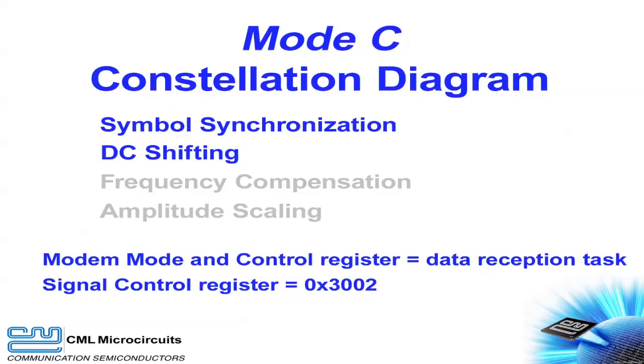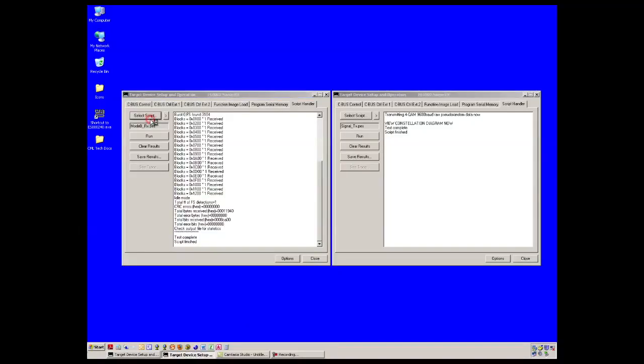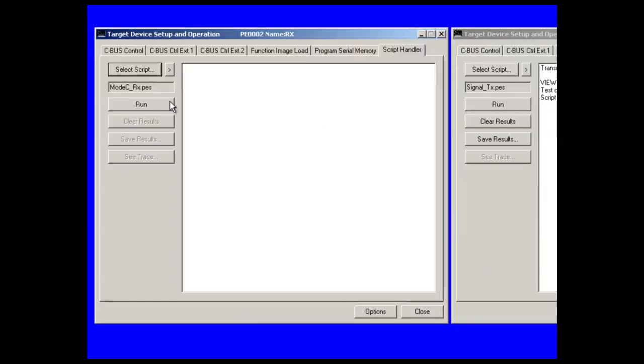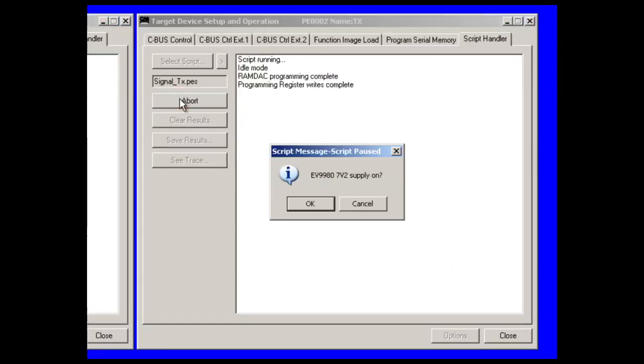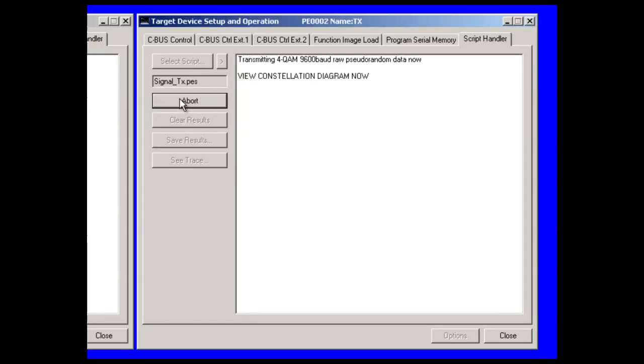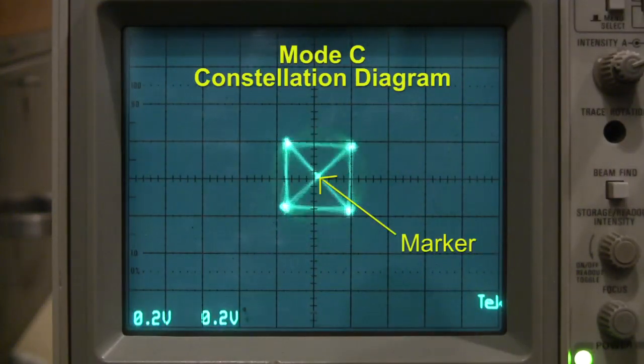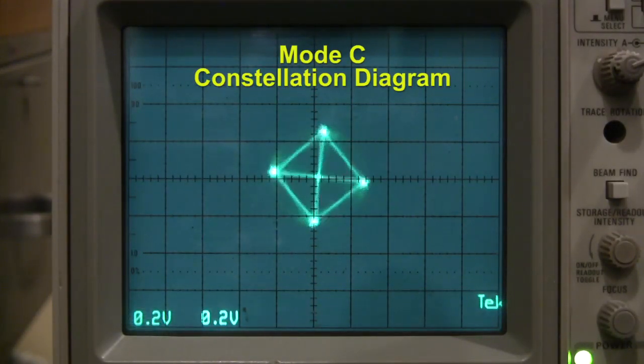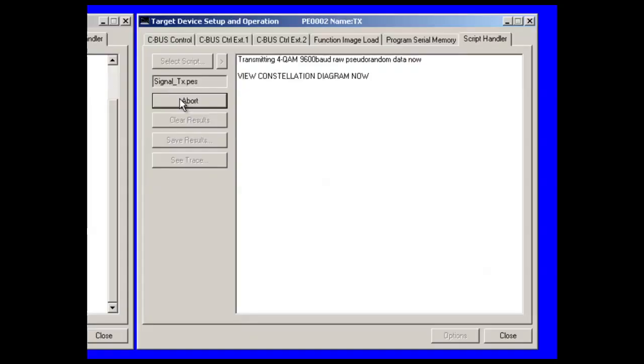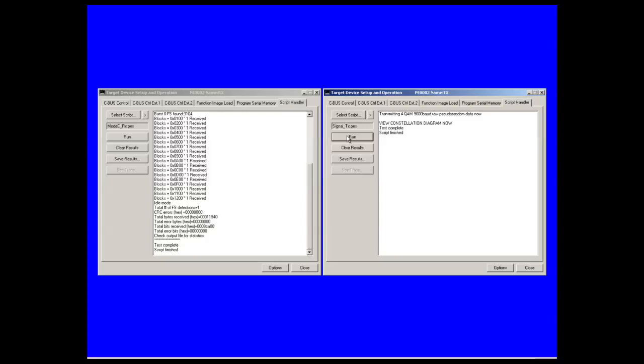Mode C improves the last image by adding a marker to indicate the required DC offset correction. However, there is no frequency compensation or amplitude scaling in this image. Launch the mode C receive script and then launch the transmit script. A marker that indicates the DC offset is clearly visible. This DC offset estimate is dynamically updated by the CMX 7163. Close out the mode C scripts when you are ready to move to mode D.